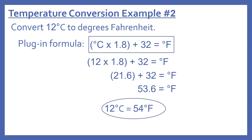We keep that in parentheses and do it first: 12 times 1.8 equals 21.6, then plus 32 equals 53.6, which rounds to 54 degrees. So 12 degrees Celsius equals 54 degrees Fahrenheit.